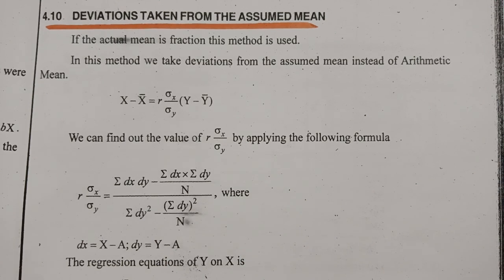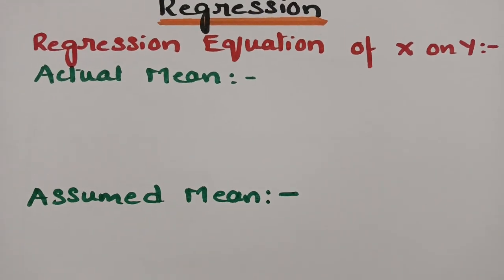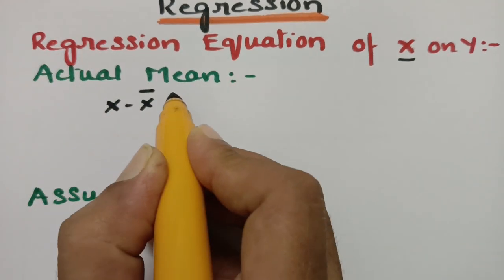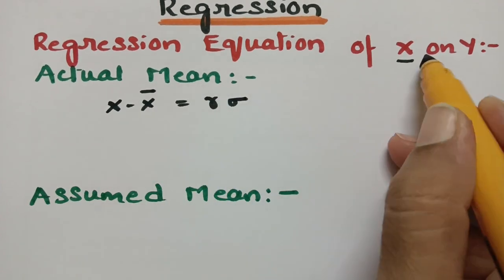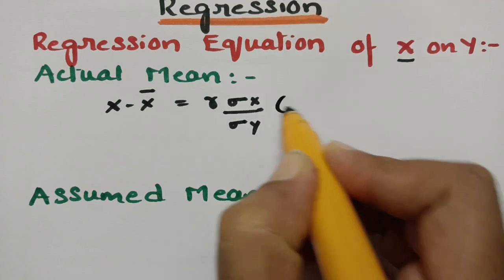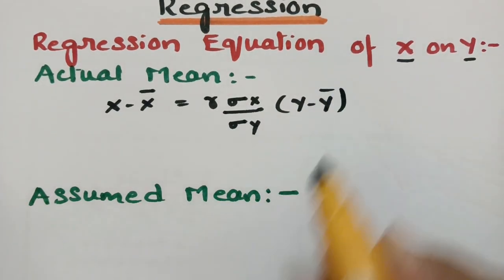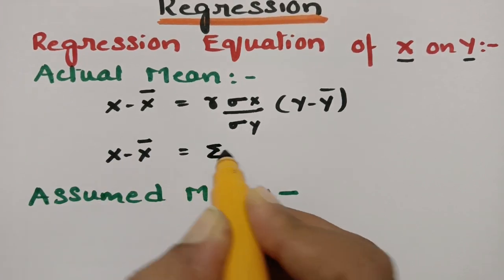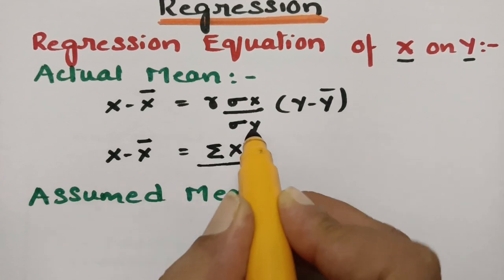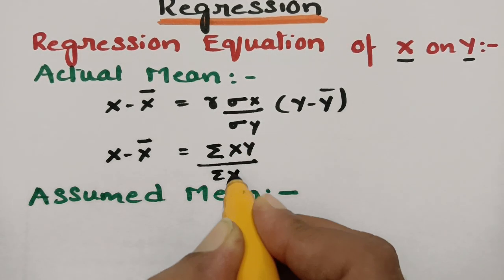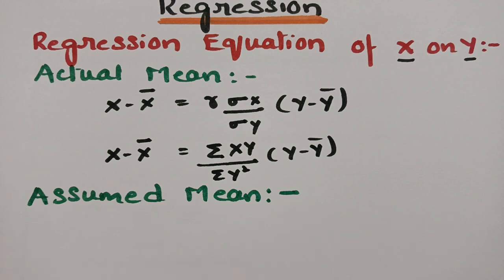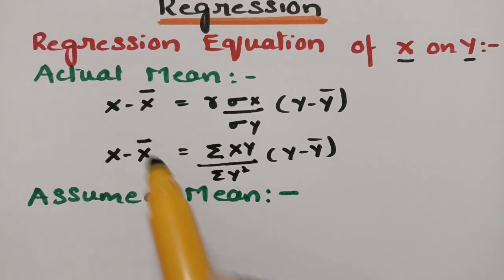Let me show you the difference between the actual mean and the assumed mean. These are the regression equations of x on y. For x on y using the actual mean, we start with x: x minus x̄ equals r times (σx / σy) times (y minus ȳ). Alternatively, it can be written as x minus x̄ equals (σxy / σy²) times (y minus ȳ). These are the formulas for regression equations of x on y from the actual arithmetic mean.